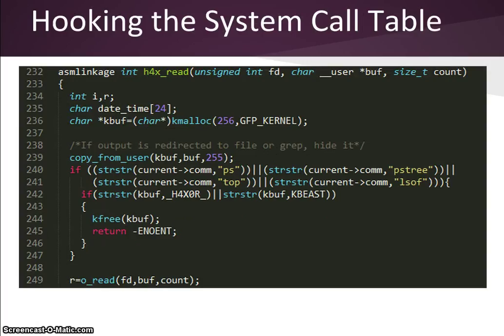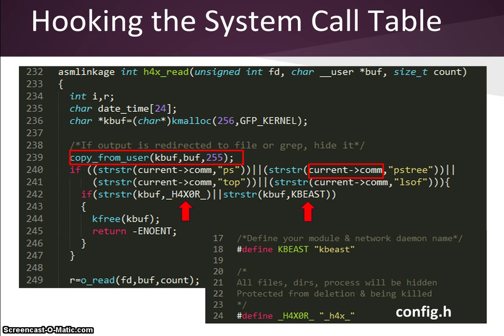K-beast manipulates the system call table by using the hooking technique. Hooking system calls ensures that files starting with the defined prefix remain hidden and unaltered. This code shows how K-beast hooks the read system call. K-beast fakes the output of the ps, ps tree, top, and lsov commands. In line 239, the copy_from_user function is used to copy the user's input to the terminal into the K-buff buffer. Lines 240 to 241, the function checks the command name for the current process, which might be, for example, ps or lsov. Line 242 checks if certain strings are in the user input. These strings are defined in the configuration file and can be seen in the config.h code snippet. If any of the defined strings are in the input, it throws an error in the attempt to hide K-beast's running processes from the user.